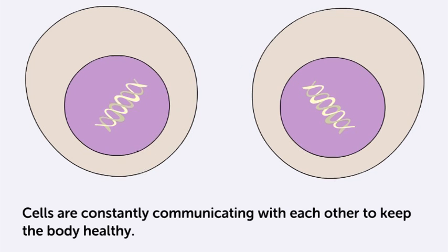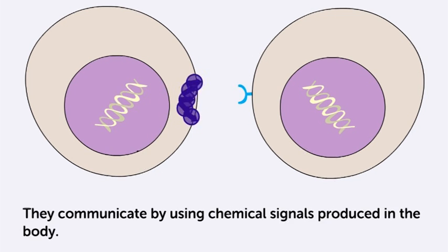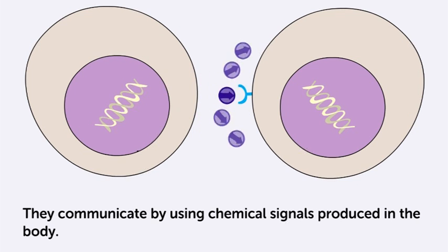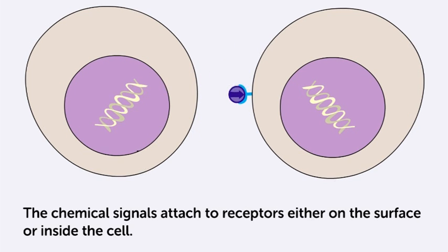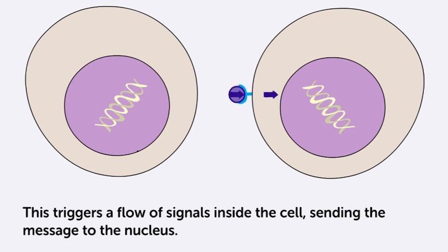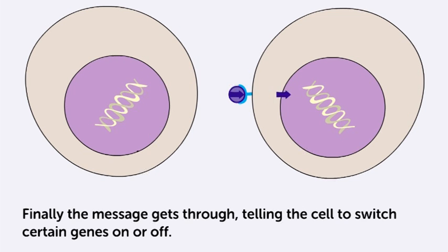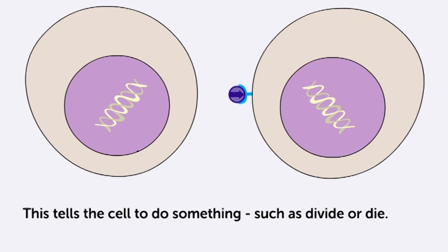Cells are constantly communicating with each other to help keep the body healthy. They communicate by using chemical signals produced in the body. The chemical signals attach to receptors either on the surface or inside the cell. This triggers a flow of signals inside the cell, sending the message to the nucleus. Finally, the message gets through, telling the cell to switch certain genes on or off. This tells the cell to do something, such as divide or die.